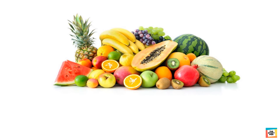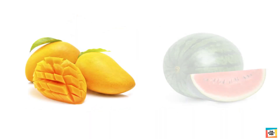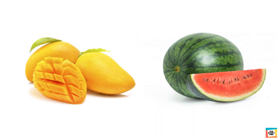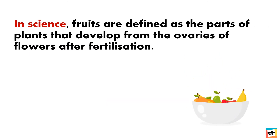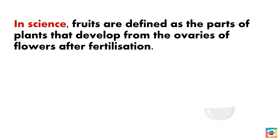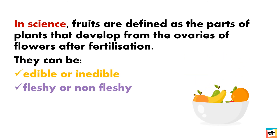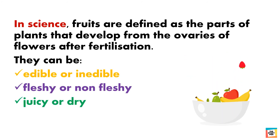When we talk about fruits, we think of those that are edible, fleshy, sweet and juicy — fruits like mangoes and watermelons. However, in science, fruits are defined as the parts of plants that develop from the ovaries of flowers after fertilization. They can be edible or inedible, fleshy or non-fleshy, juicy or dry.